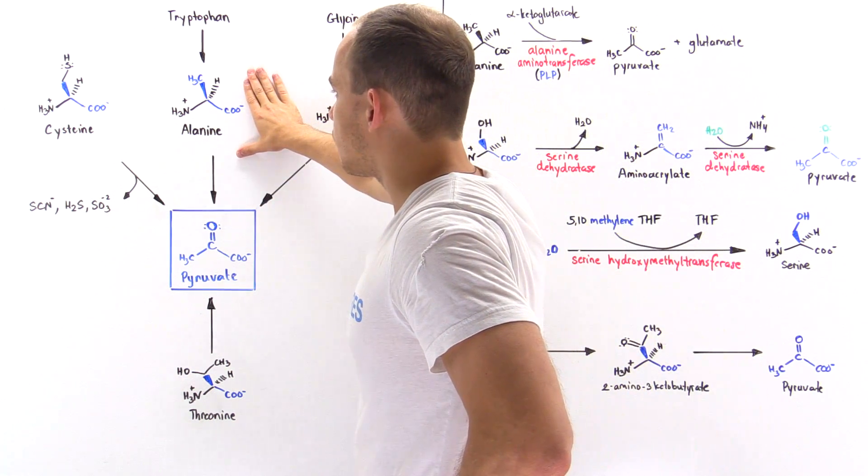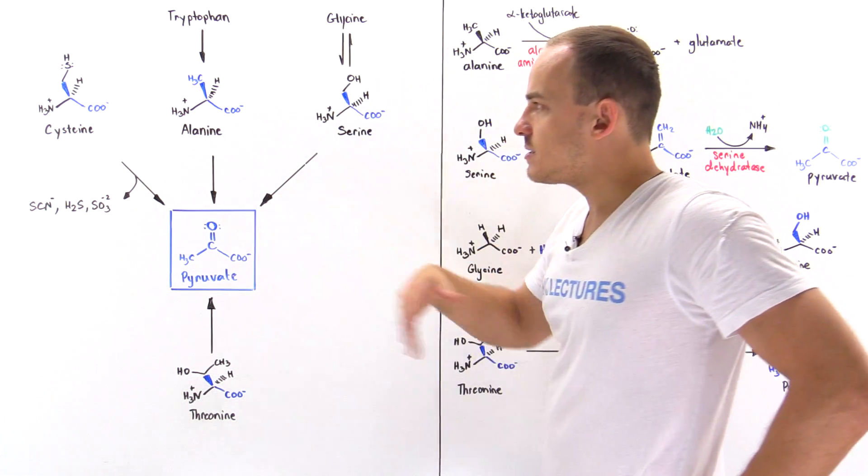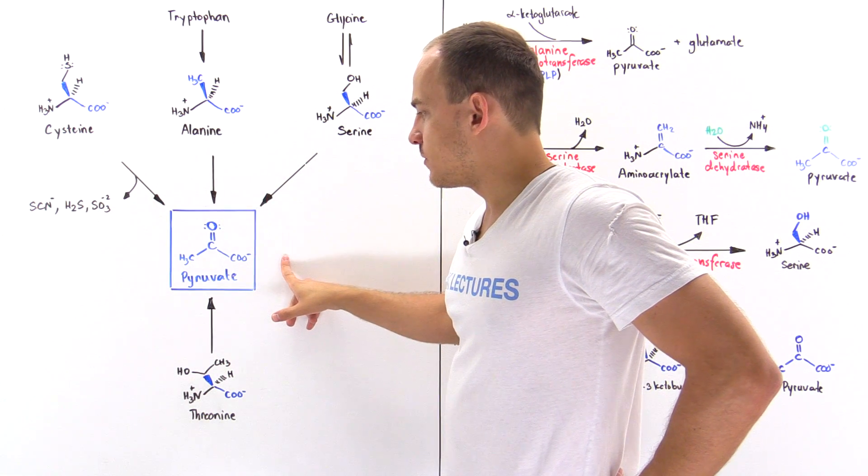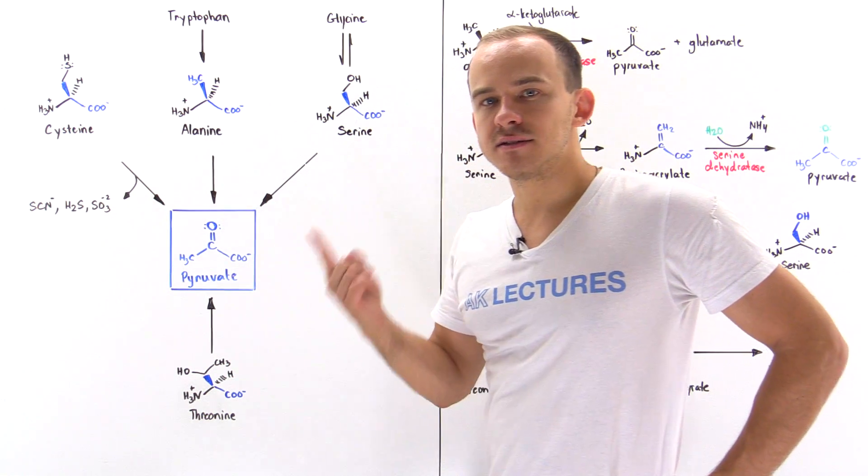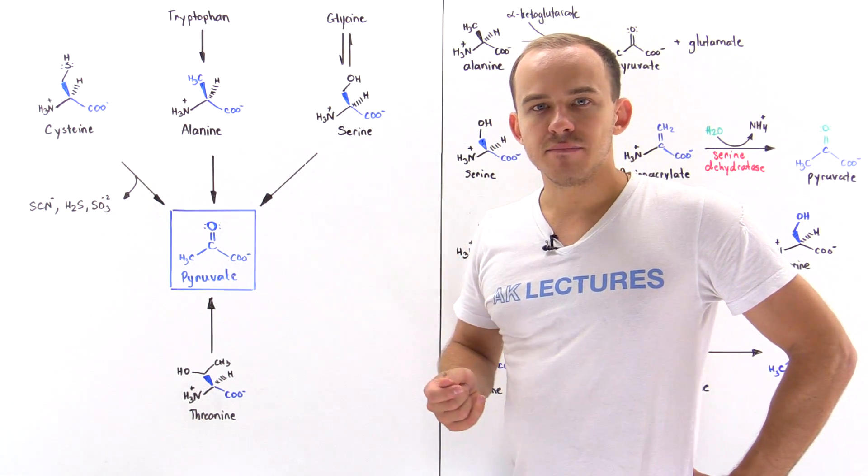Now let's move on to the conversion of alanine into pyruvate. We actually discussed this before. We saw that alanine can be transformed to pyruvate in a single step, in a single transamination step, and the enzyme that catalyzes this is known as alanine aminotransferase.